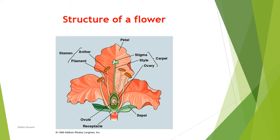In this flower, sepals are free from each other. When sepals are free, the calyx is called polysepalous. When sepals are fused — as in hibiscus, where all sepals fuse to form a green tube — the calyx is called gamosepalous. So calyx is the outermost accessory whorl of a flower.